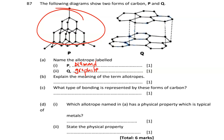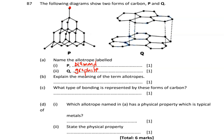So carbon can exist as diamond and also graphite. All these bonds that you are seeing here — these parts — these are carbon atoms. These are carbons attached to each other. So this is diamond. And since carbon can exist in two forms but with different structures, that is what we call allotropes.